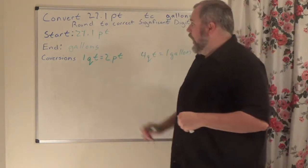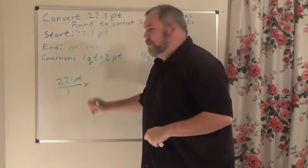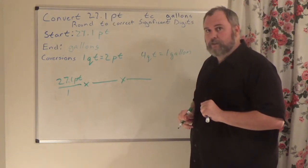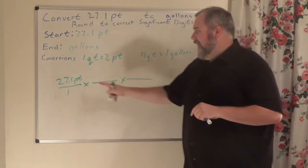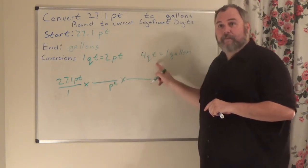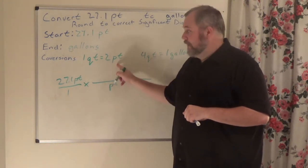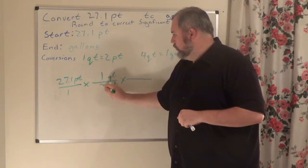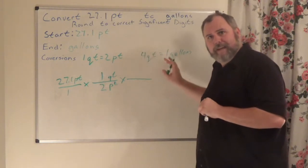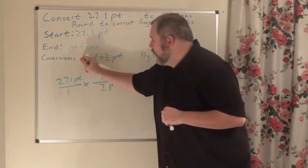Where do I start? 27.1 pints — put a one under it. I'm going to multiply by two conversion factors. I don't want pints, so pints go to the bottom of the first conversion factor. This one has pints, so the top number is quarts: one quart over two pints. I've used this conversion factor, so I cross it out. The biggest mistake people make is using the same conversion factor twice.